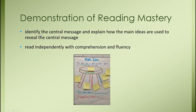Our demonstration of reading mastery through this six weeks is to get them to a level M, but also to identify the central message, explain how the main ideas are used to reveal the central message, and read independently with comprehension and fluency. After reviewing lots of data from the STAR, we really need to make sure that our kids have a strong foundation in main idea.